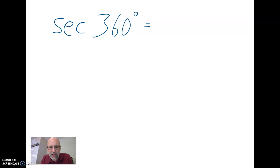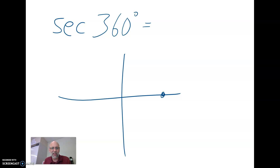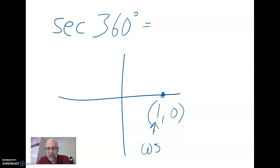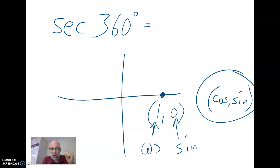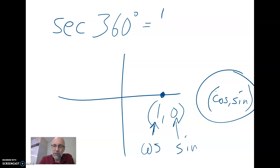Secant of 360 degrees: 360 degrees terminates right there on the x-axis, and on the unit circle that point is (1, 0). Remember, the x-coordinate is the cosine and the y-coordinate is the sine. Cosine of 360 is 1, sine of 360 is 0. This applies to anything that terminates there — 0 degrees, 360 degrees, 720 degrees all have cosine equal to 1 and sine equal to 0. Secant is the reciprocal of cosine: 1 over 1 is 1.